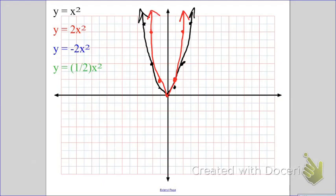So you see, when I put a number larger than 1 in front of the x squared, it actually makes it go narrower, skinnier.